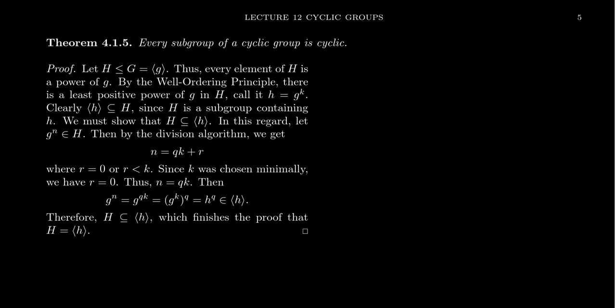Because every element in G is a power of little g, every element in H will likewise be a power of little g. So using the well-ordering principle, we want to choose the smallest power of g, the least power of g that we can find inside of H. Let's call this element g to the k, and we're going to call it h for short.